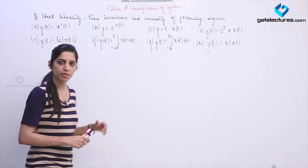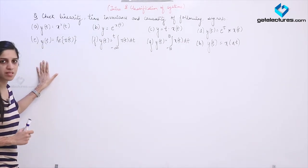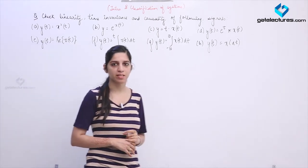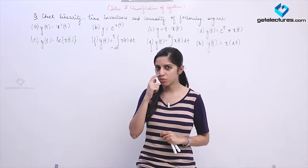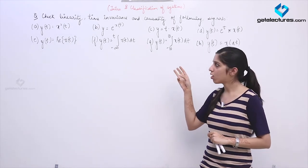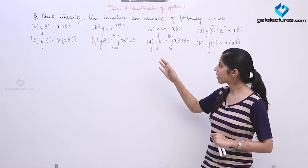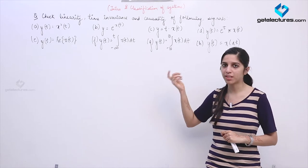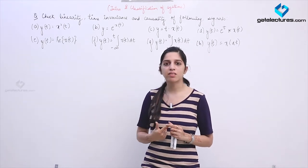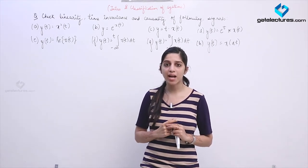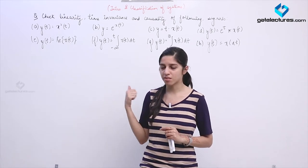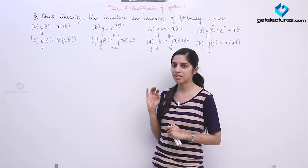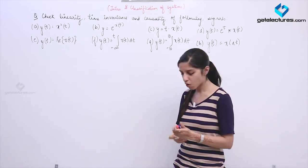Now we are going to look at a question. They have given us some systems and they are asking you to check linearity, time invariance, and causality of the signals. We have already looked at the rules and the procedure to check all of these. We are primarily concerned with linear, time invariant, and causal systems, because only those systems can be mathematically modeled.